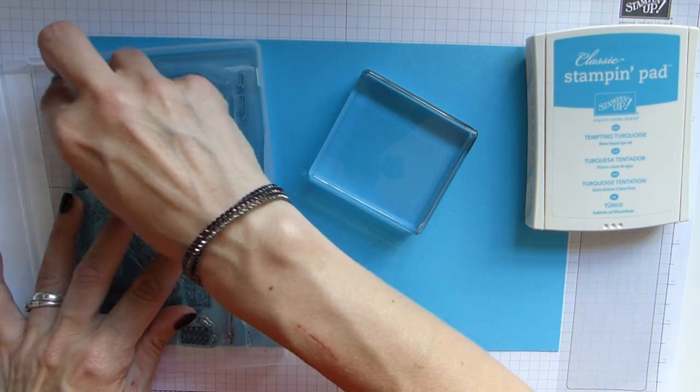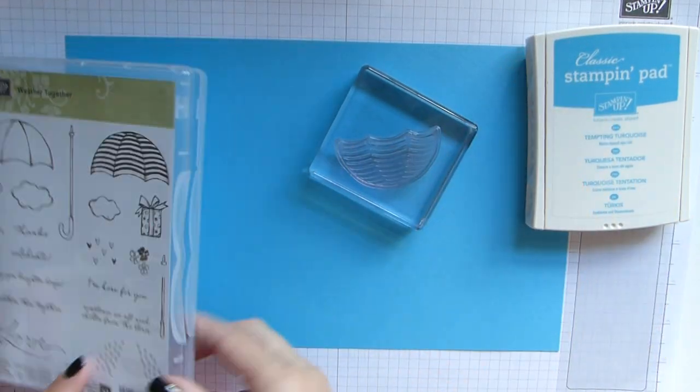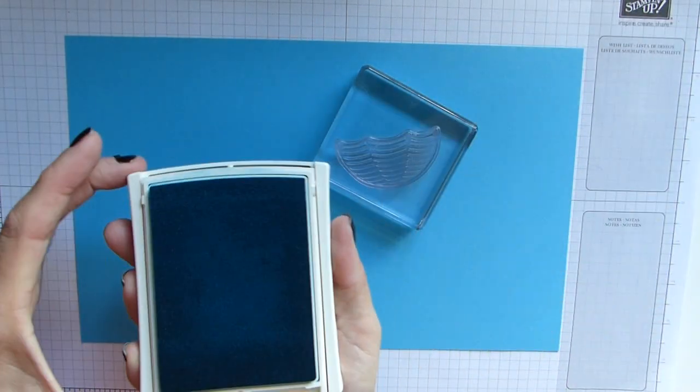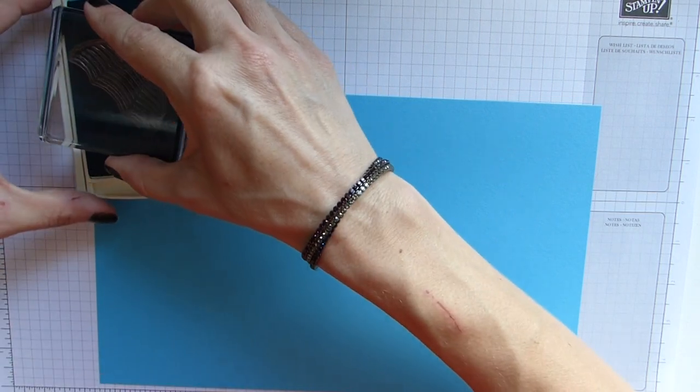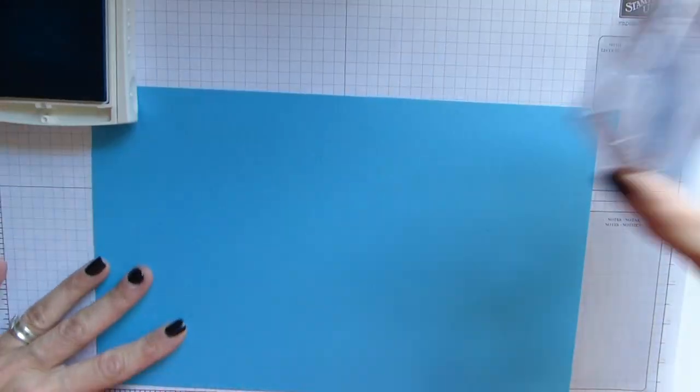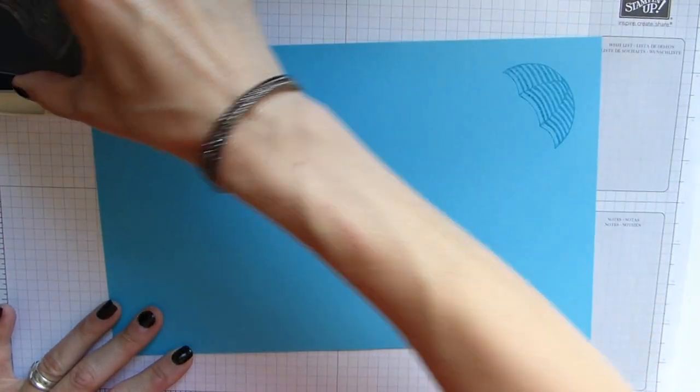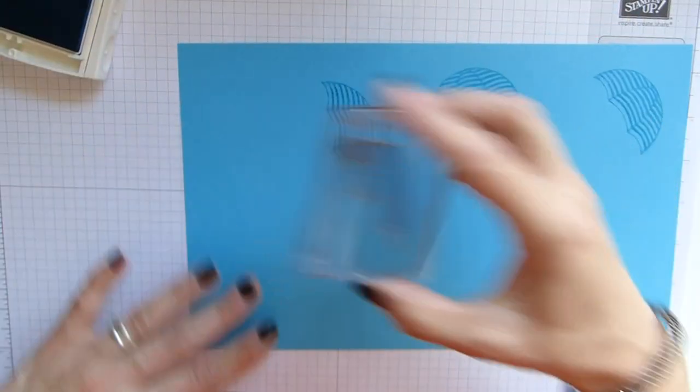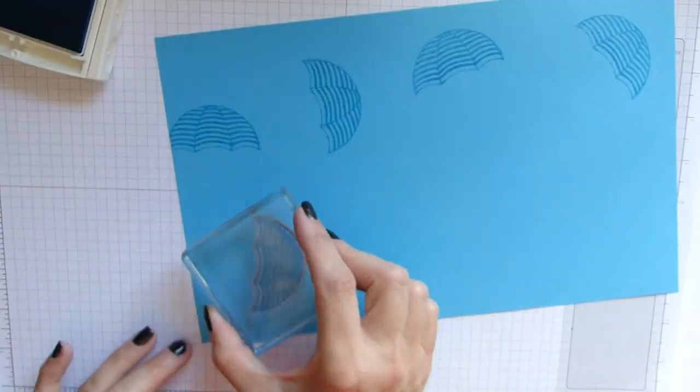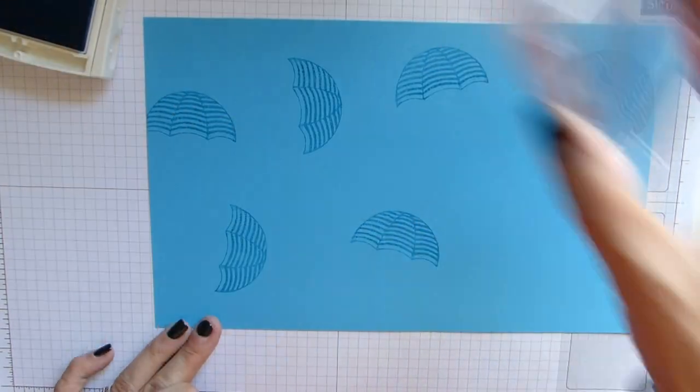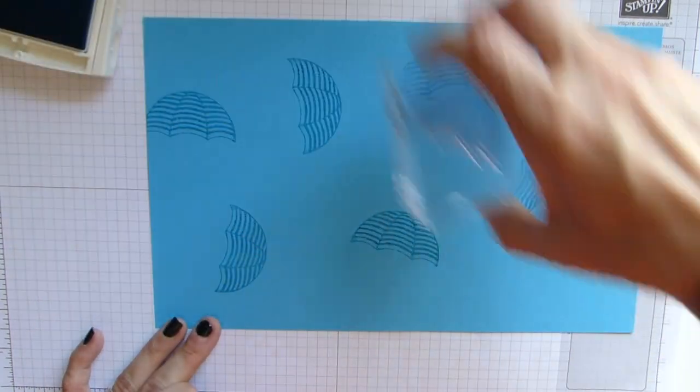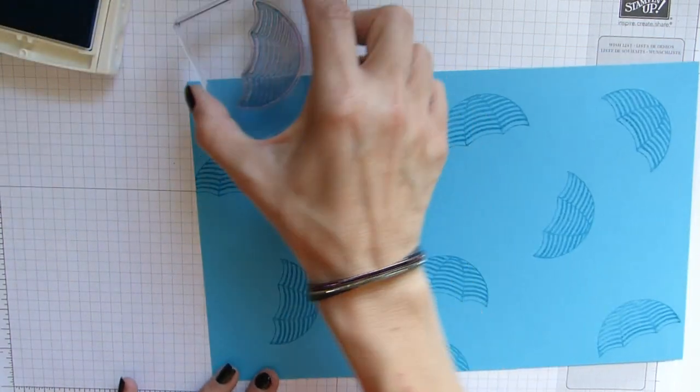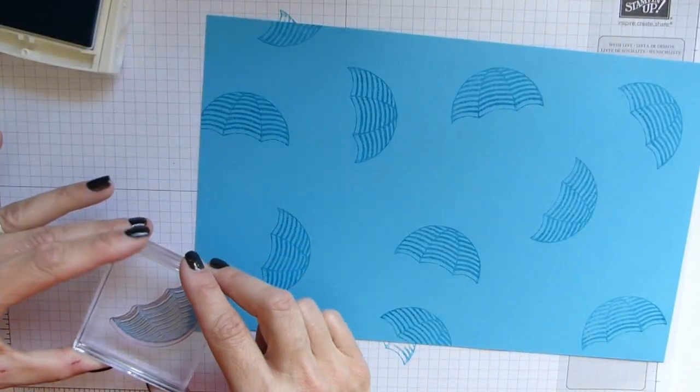I've got my B block, and I'm going to use the stripey umbrella. I'm using my tempting turquoise ink, and then I'm simply just going to add random umbrellas all over it any which way I please. Just think when you're doing this though that you don't want them too close together because you've still got to fit the handles of the umbrella on.